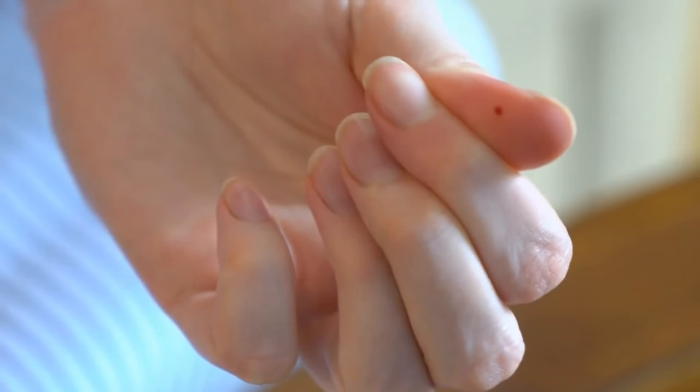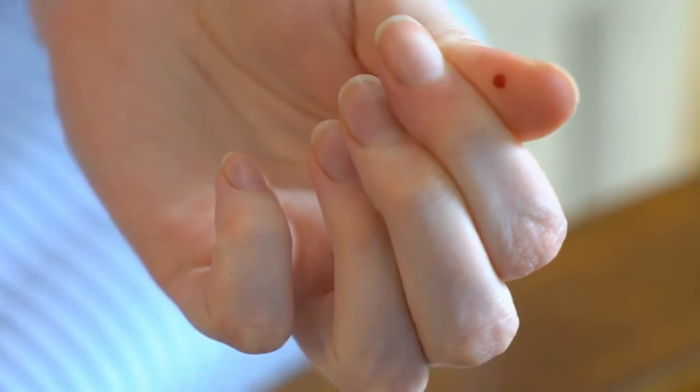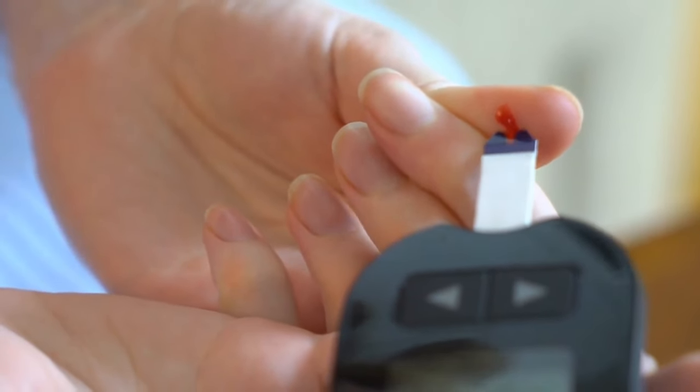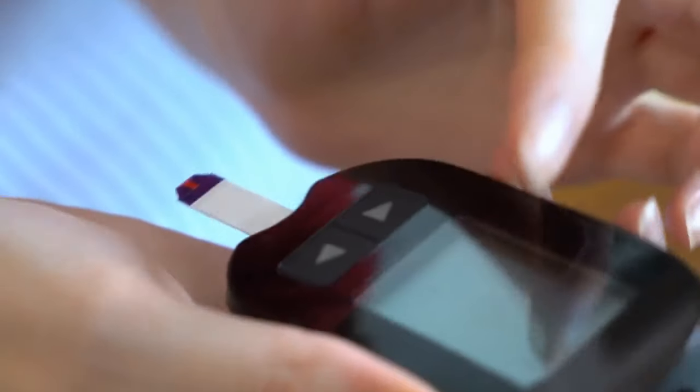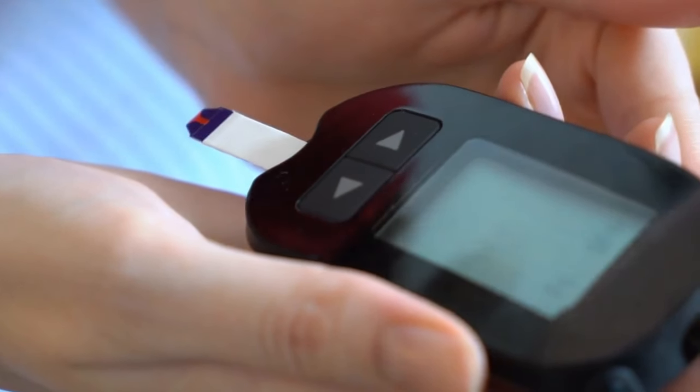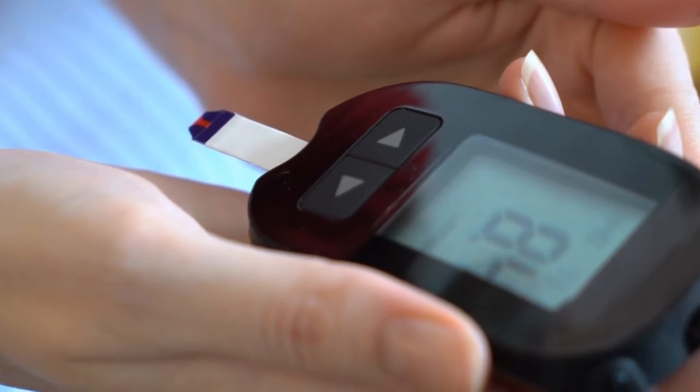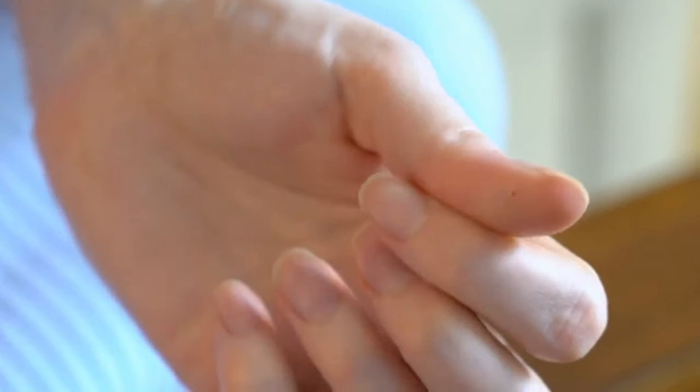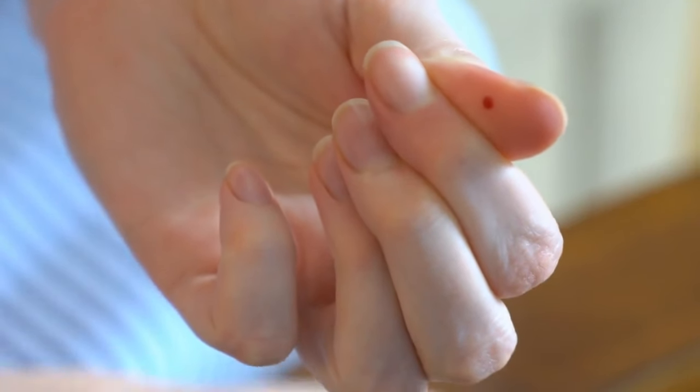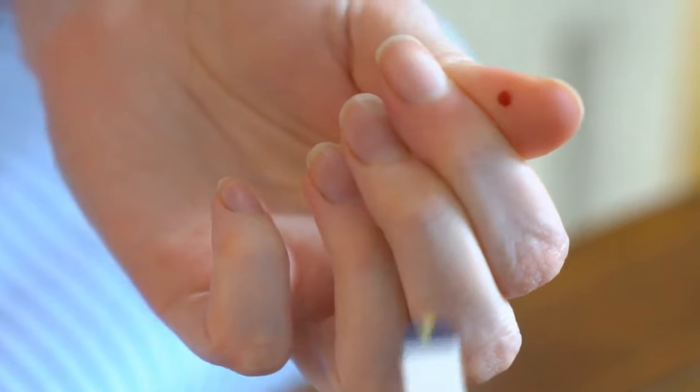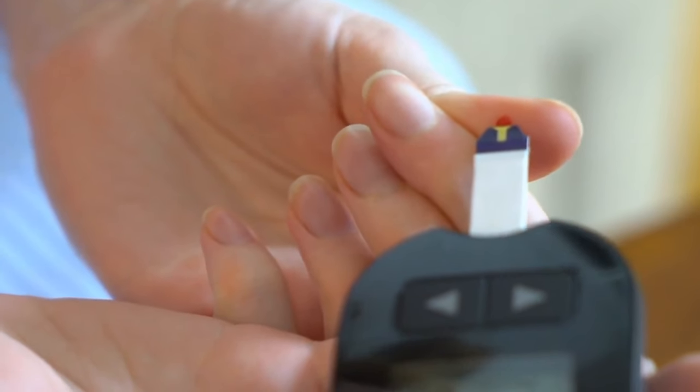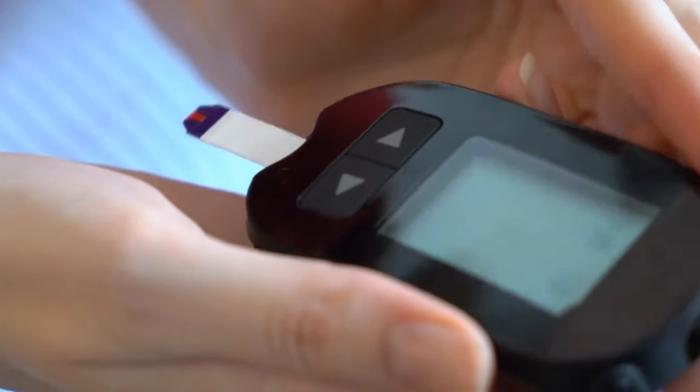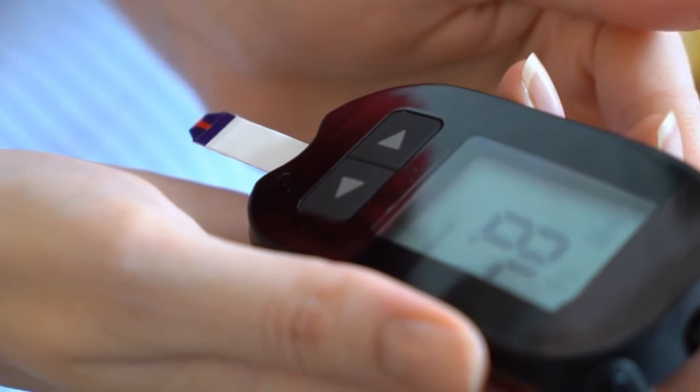CGM systems can alert users if their glucose levels are too high, hyperglycemia, or too low, hypoglycemia, enabling them to take immediate action to mitigate health risks. These systems are particularly beneficial for people with diabetes, offering a more comprehensive picture of glucose trends throughout the day compared to traditional fingerstick measurements. This continuous feedback can help with more precise adjustments in diet, physical activity, and medication, including insulin dosing.